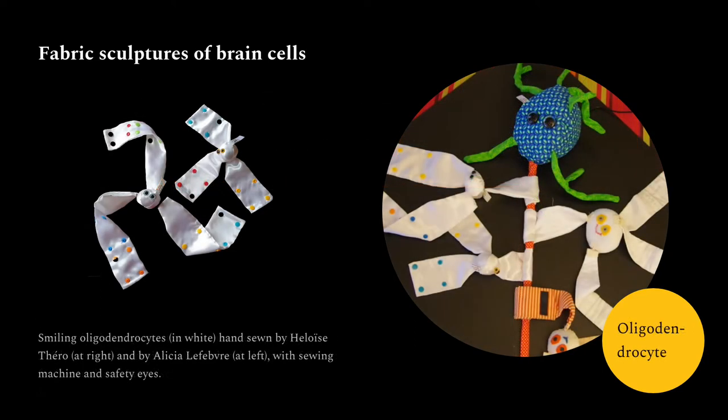Our nervous system also contains glial cells that take care of neurons. We call them glia, like glue, because when researchers first discovered them, they thought they were used to glue all the brain together. Now we know that is not what they are meant to do, but they have kept their name.